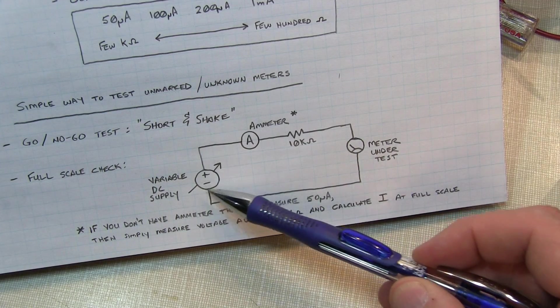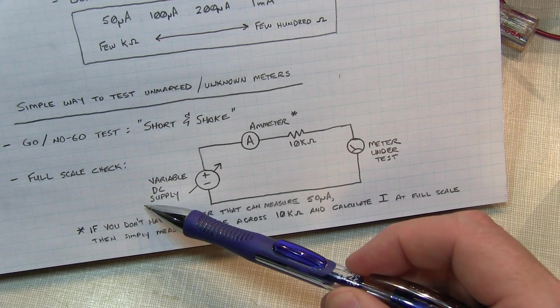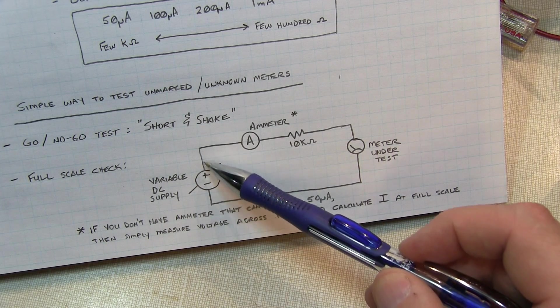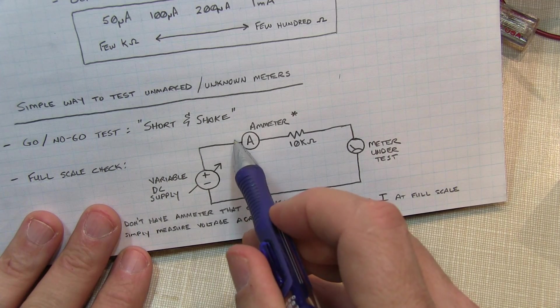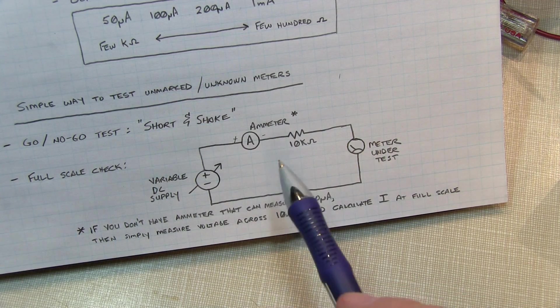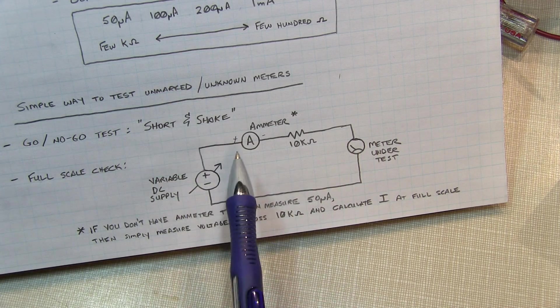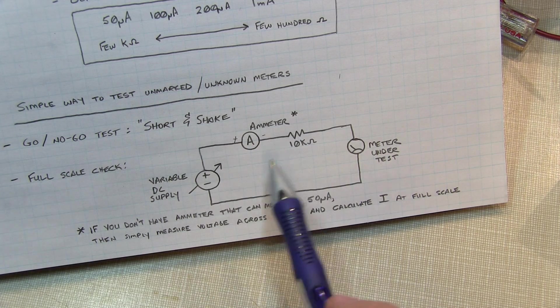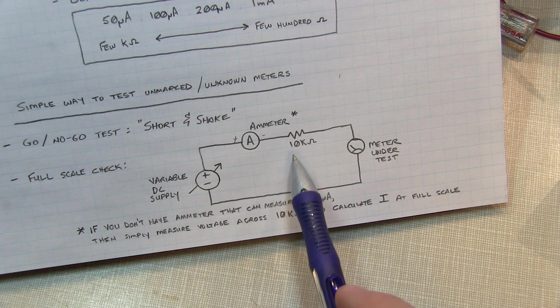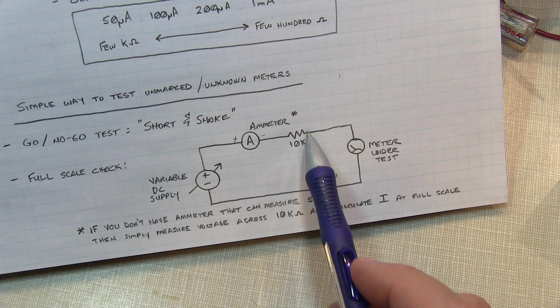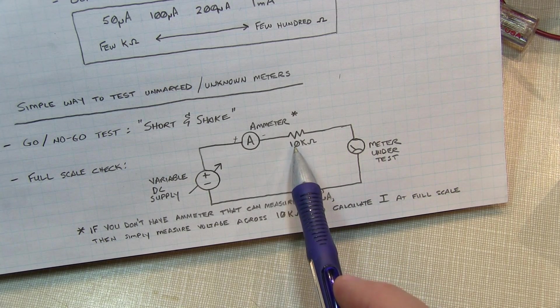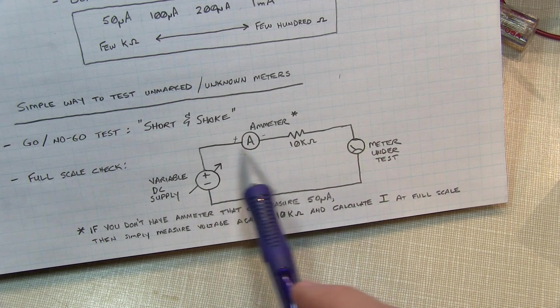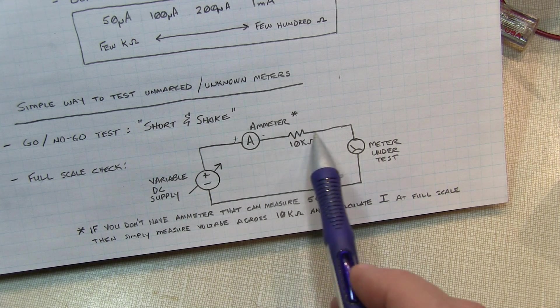So what I've got set up here is a variable DC power supply. Something that can be dialed down to zero and then up to typically at least 10 or 12 volts as a good power supply. Connect that in series with an ammeter. And I guess we'll make this a plus and minus here on the ammeter. And you really want to have an ammeter that can read down to probably in the order of 50 microamps or so. Because you might have a very sensitive meter and you want to be able to accurately measure that. And then I like to use a 10K resistor in series with the meter and then back to the power supply.